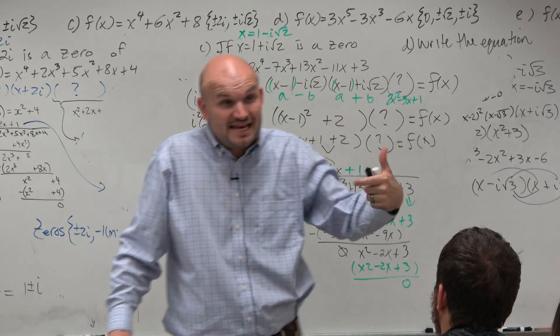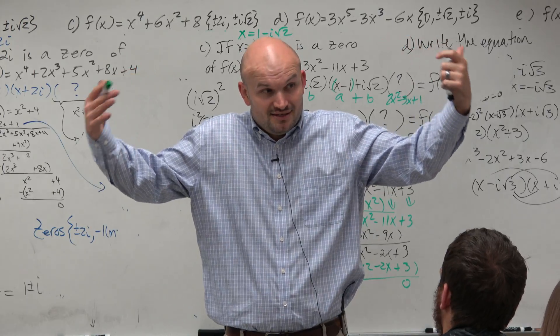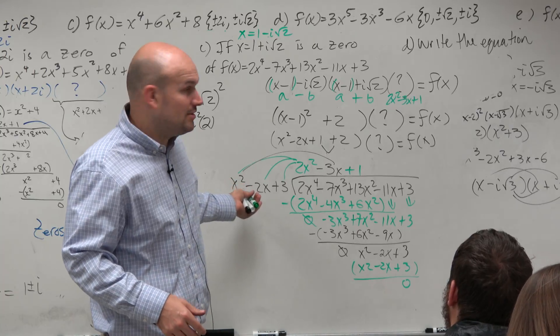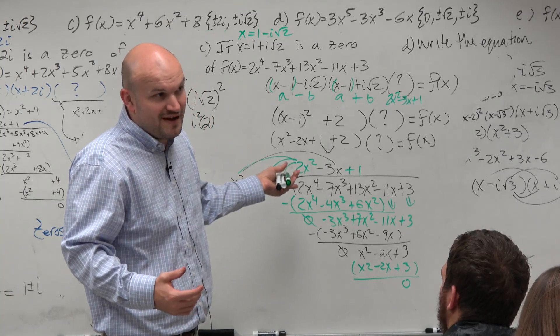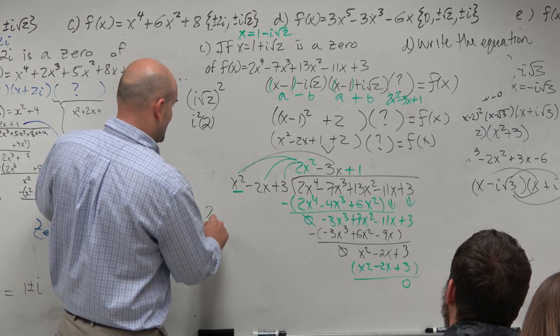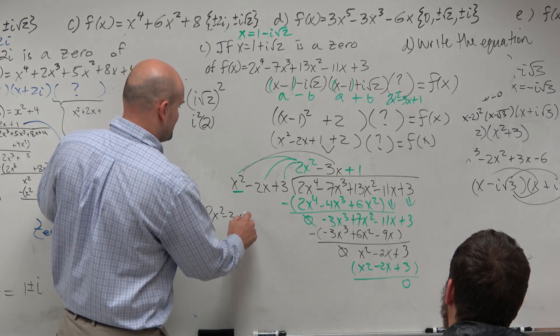So that means from the factor, I can set it equal to 0 to find the zeros. Should I automatically just go to the quadratic formula because it has a 2 in front of it? Or should I try to factor it? Let's try to factor it. Let's see. So we take our factor 2x squared minus 3x plus 1 equals 0.